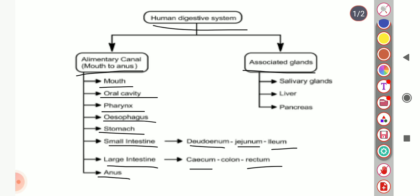The associated glands are those that secrete the enzymes necessary for the digestion of carbohydrates, proteins, and lipids. These are the salivary glands, liver, and pancreas. The salivary glands secrete the enzyme amylase, which is the main salivary enzyme necessary for the digestion of carbohydrates present in the food.